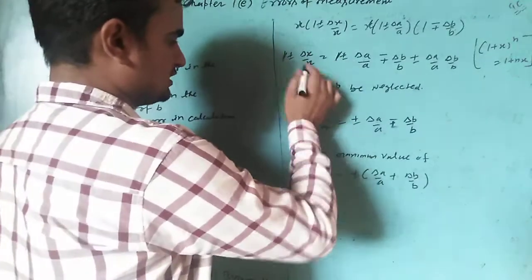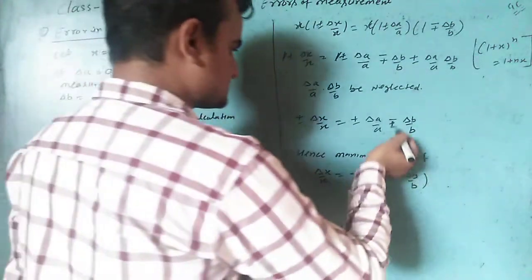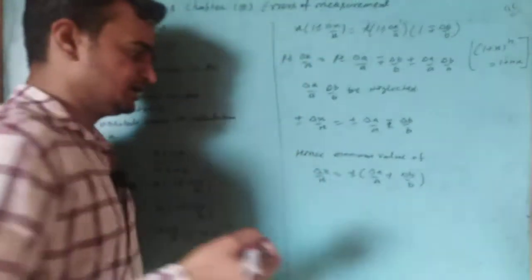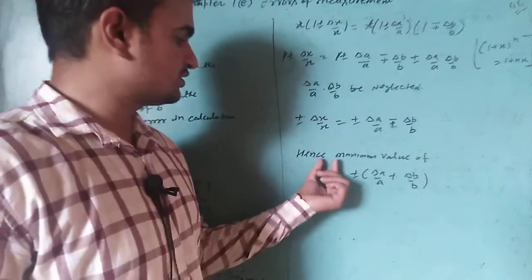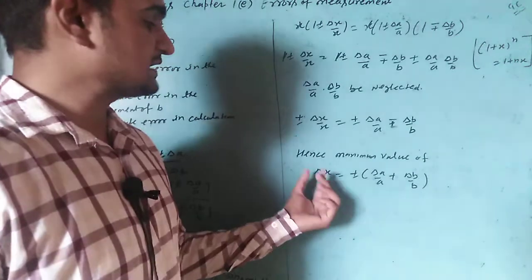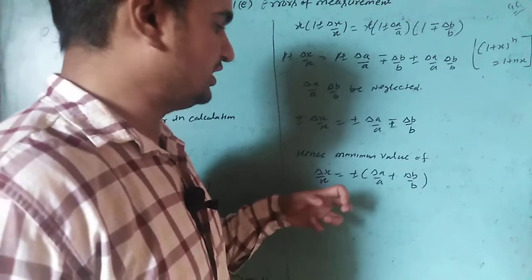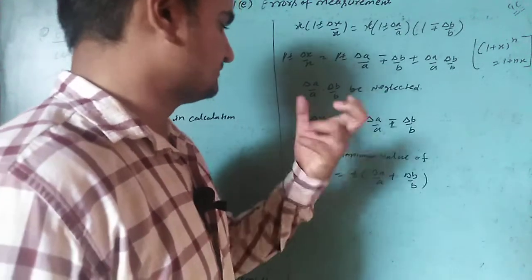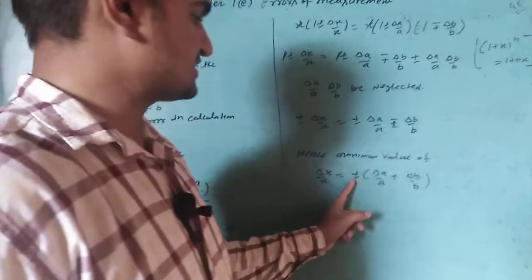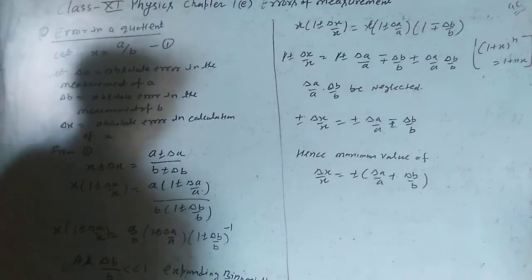The remaining quantities: 1 cancels out, giving plus minus delta x upon x equals plus minus delta a upon a minus plus delta b upon b. The maximum value of delta x upon x is plus minus delta a upon a plus delta b upon b. So the relative error in the quotient equals the sum of the relative errors of the two individual quantities. This is the error in quotient: delta x upon x equals plus minus delta a upon a plus delta b upon b.